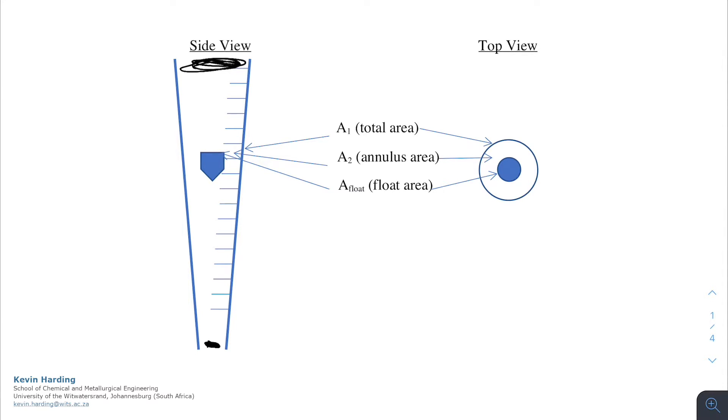When we look at the float itself, we look at a cut through from the top. We have the area of the float in the middle. The total area we define as A1, and the section in the middle which forms the donut-like shape is area A2.